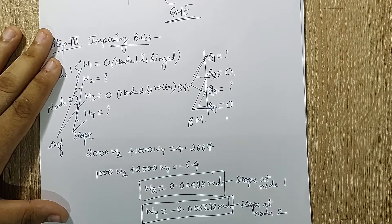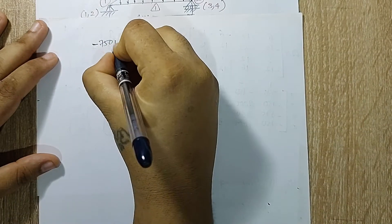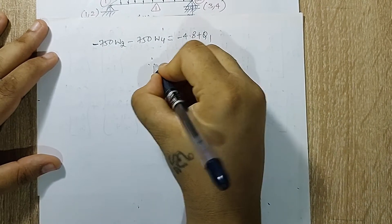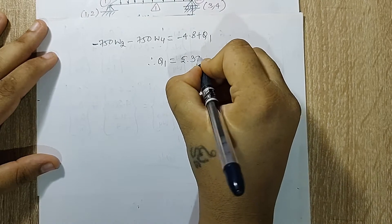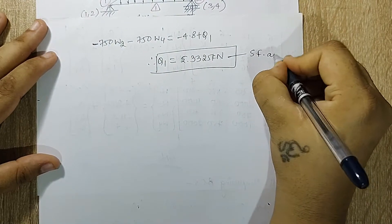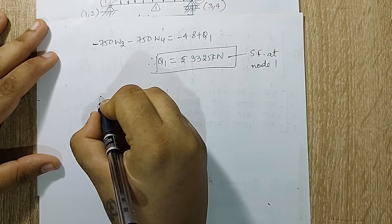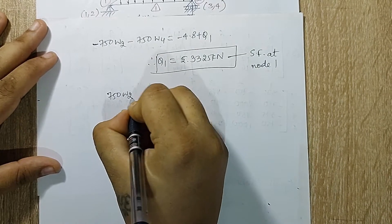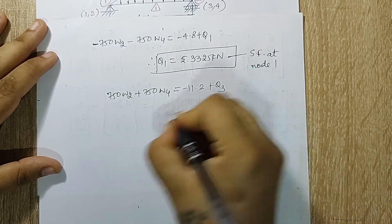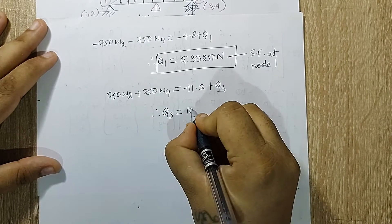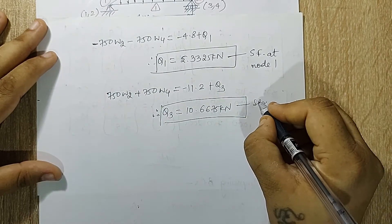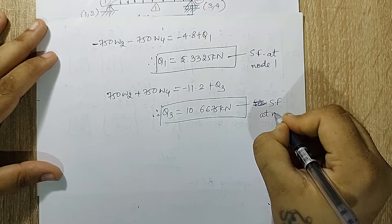Now let's write down the equation for q1 and q3. I have q1 as 5.3325 kN. This is my shear force at node 1. And I have one more equation as 750 w2 plus 750 w4 is equal to minus 11.2 plus q3. When I solve this, I get q3 as 10.6675 kN. This will be my shear force at node 2.